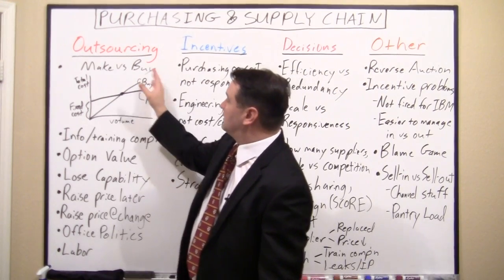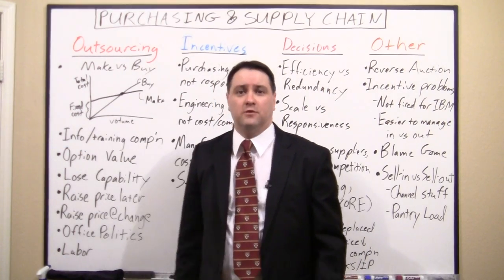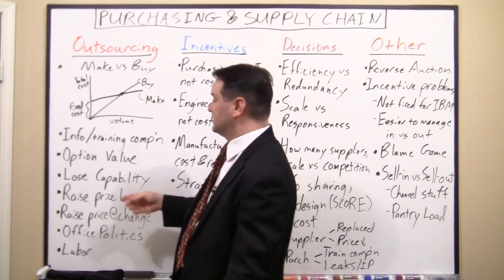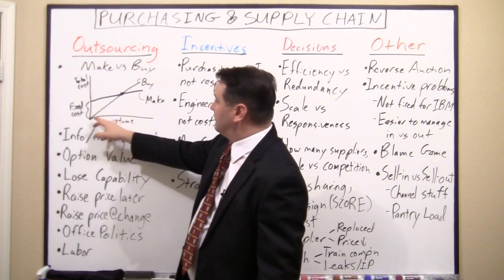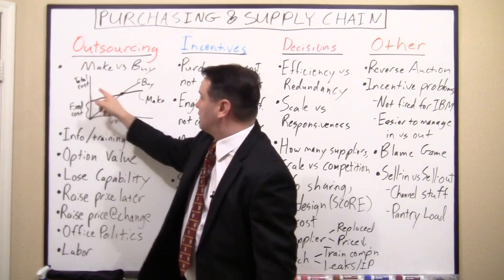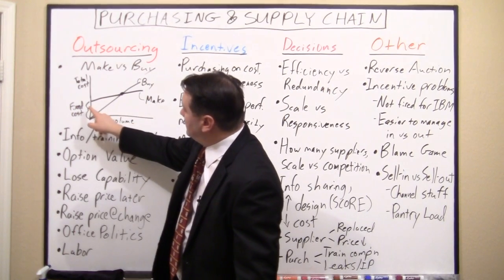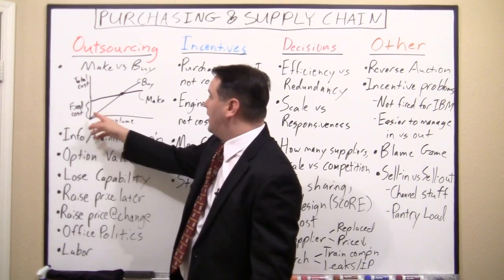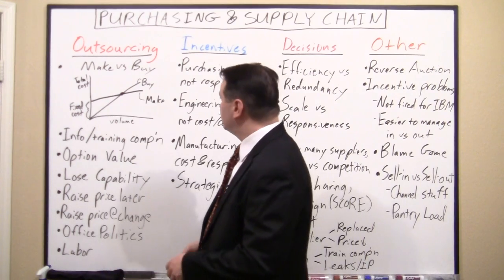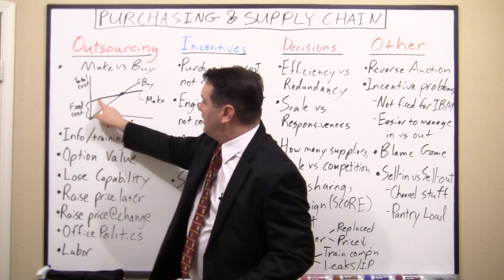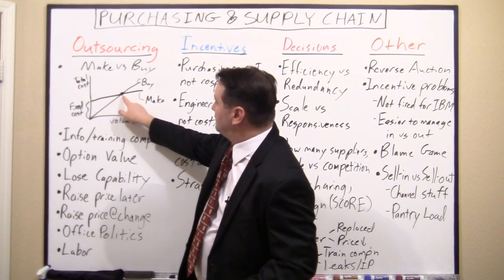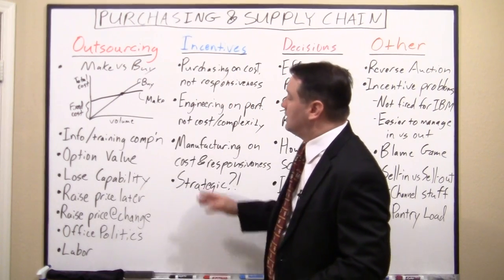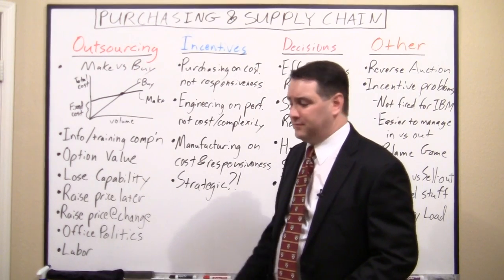Now I want to talk about decisions around outsourcing. Classically there's a finance model called the make versus buy decision. If you're buying it from someone, let's say it's $10 a unit — as volume goes up, total cost rises proportionally in a straight line. Whereas when you make it, you can usually do it at a lower variable cost per unit, but you have the fixed cost of building the factory and infrastructure. So it starts at a higher level. When you're at low volume, the make line is more expensive; but past the break-even point, buying becomes more expensive and you'd want to make it.